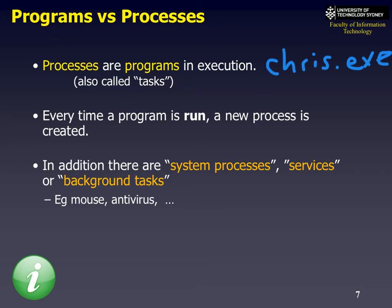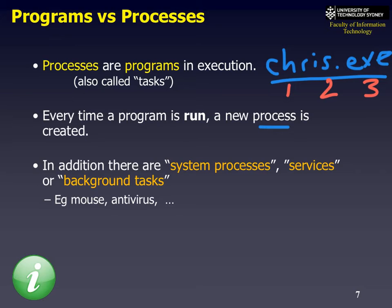A process is a program that's running. A program is a file, basically something like chris.exe. When these programs are executed, the process contains a copy of the code, a bit of memory, and resources that the process might need. Every time you run a program, you get a new copy. So if I run chris.exe three times, I'll have three separate processes running the same program.